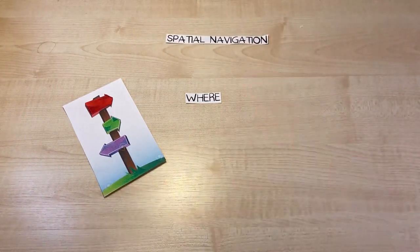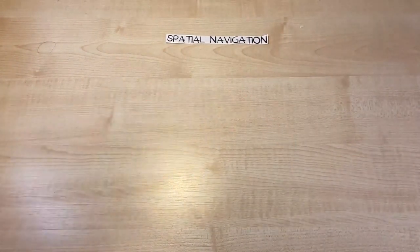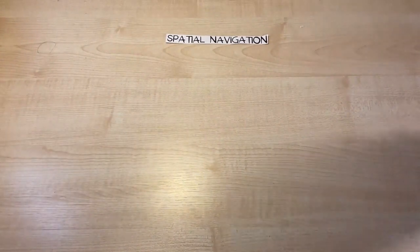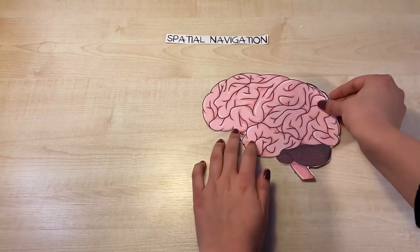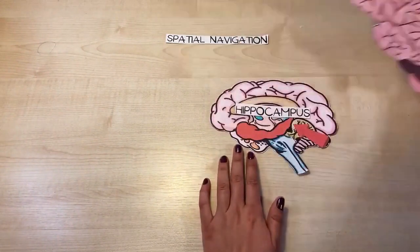Our brain uses a detailed network of neurons to complete this task. These neurons are found in or close to a specific structure of the brain called the hippocampus.